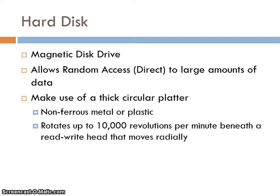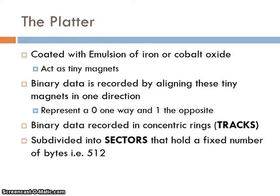A hard disk drive is a random access device, meaning it has direct access to different areas of the disk. The disk is the actual platter, and the drive is the mechanism — inside a computer we call it an HDD or hard disk drive, which incorporates both the platter and the mechanism for reading or writing. The platter is coated with an emulsion of iron or cobalt oxide, which acts as lots of tiny magnets on the surface, representing zeros and ones depending on their alignment.